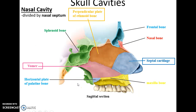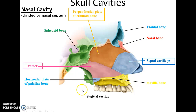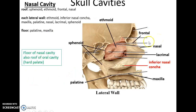The medial wall of the orbit is made up of the maxilla bone, the lacrimal bone, the ethmoid bone, and a little bit of the sphenoid bone. The nasal cavity is also made up of a variety of bones. The nasal septum — the wall that separates the nasal cavity into two sides — is made up of the perpendicular plate of the ethmoid bone, the vomer, and the septal cartilage. The roof and floor of the nasal cavity are formed by different bones: the horizontal plate of the palatine bone and the maxilla bone form the floor, while the sphenoid, ethmoid, nasal, and frontal bones help form the roof. The lateral walls include the ethmoid bone, the inferior nasal concha, parts of the lacrimal bone, the maxilla, and the palatine.